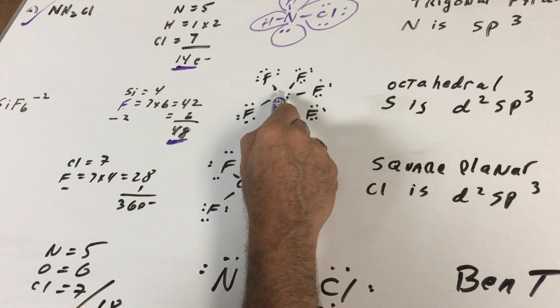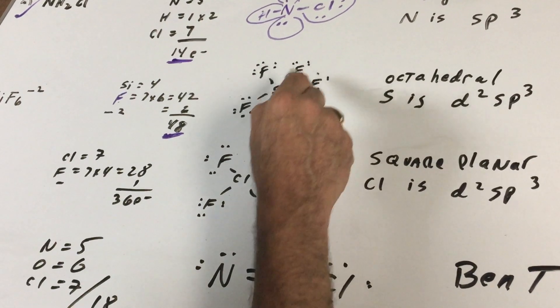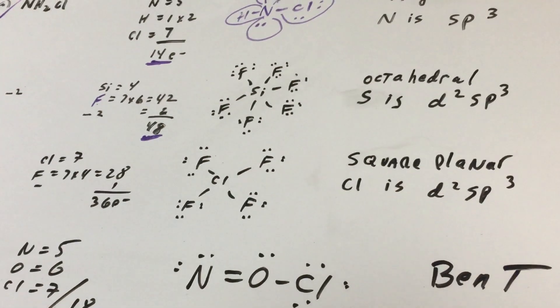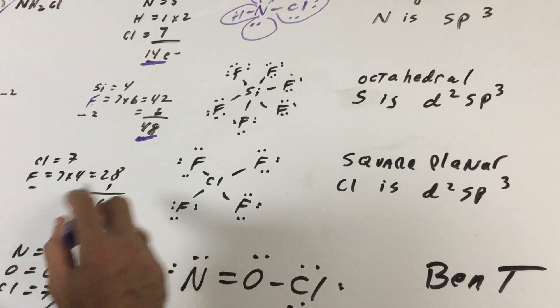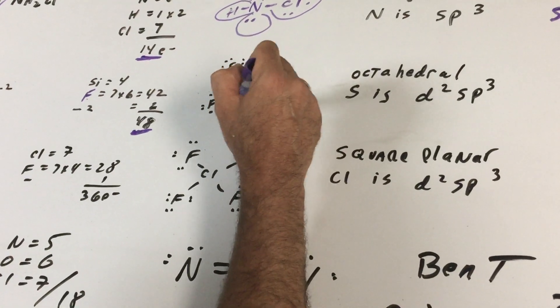You put the silicon in the middle, you give the outer guys, when you connect them, eight. Two, four, six, eight, they all have eight. That would be 48 if you add them up, and this shape when you have the central atom going to six groups would be called octahedral.